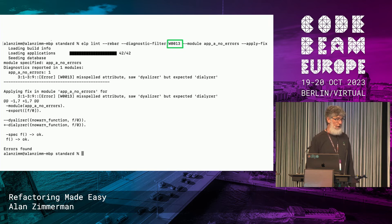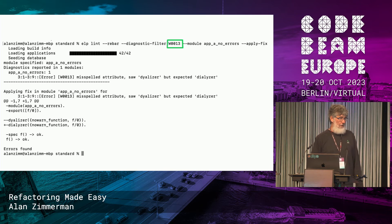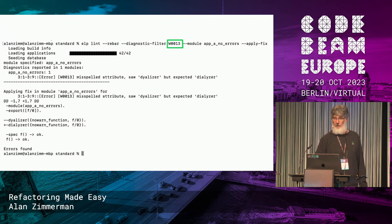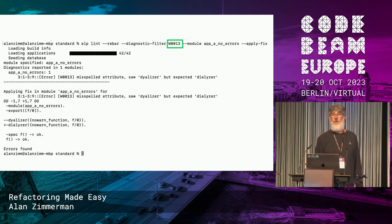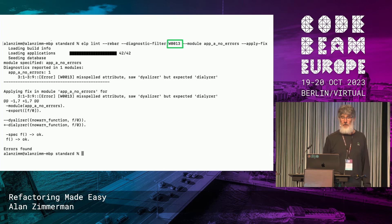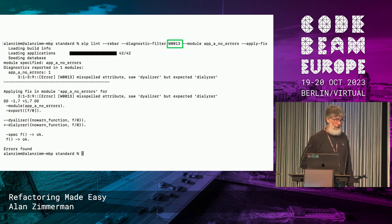This is how the same problem gets applied from the command line. We're calling ELP lint, saying we're building a rebar project, filtering out the W0013 warning in that particular module, and applying the fix. You can see it says this is what we found — the misspelled attribute — and this is the diff that we've generated and applied to it. It has actually modified the code in place, so you can use your normal tools to generate a pull request. This could run across your entire project — wherever it shows up, it's going to do the fix.